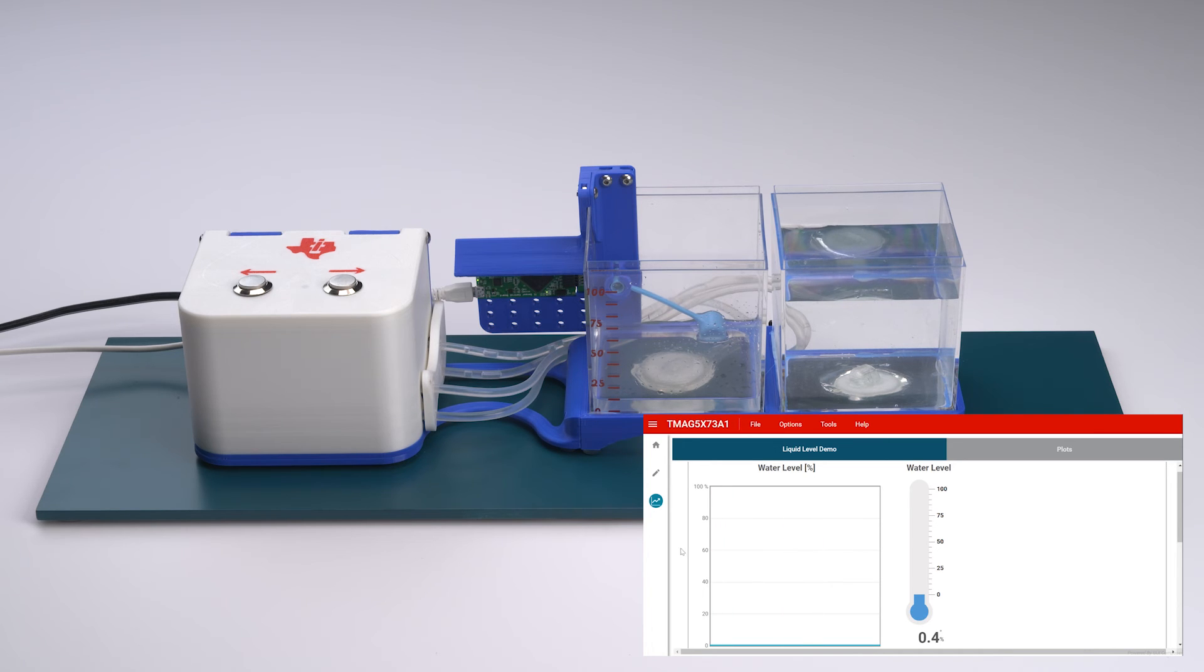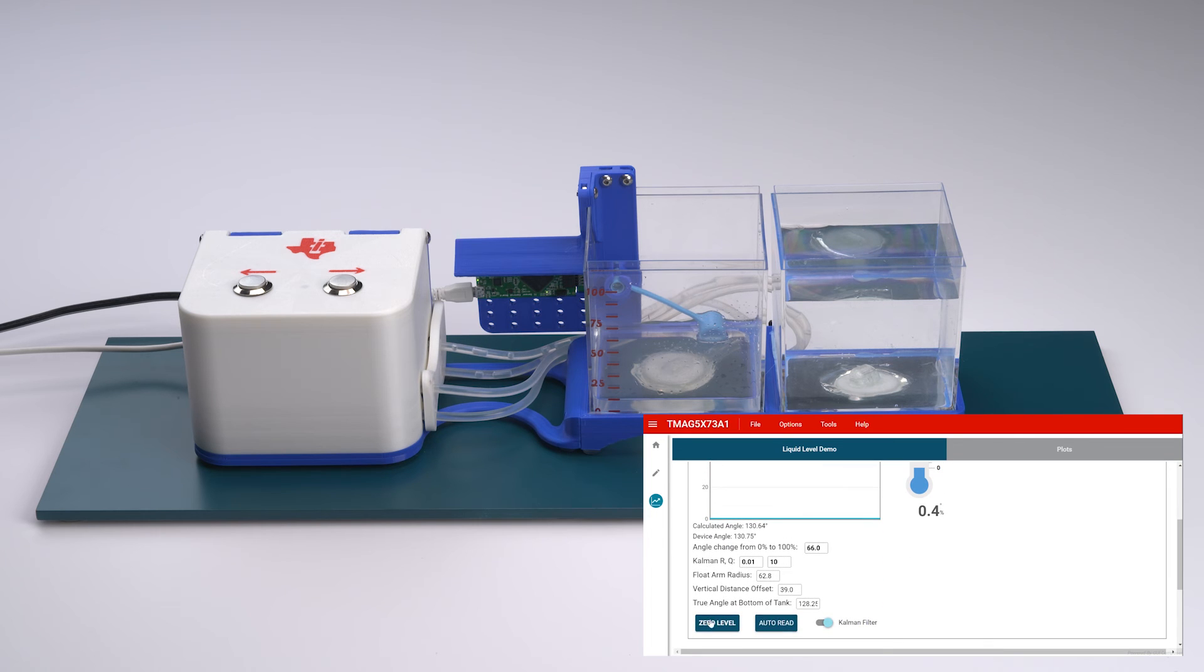When the tank is empty, the GUI can be calibrated for your system by using the zero level button. Another feature I'd like to spotlight is the integration of a Kalman filter, which can be disabled towards the bottom if it's not needed.